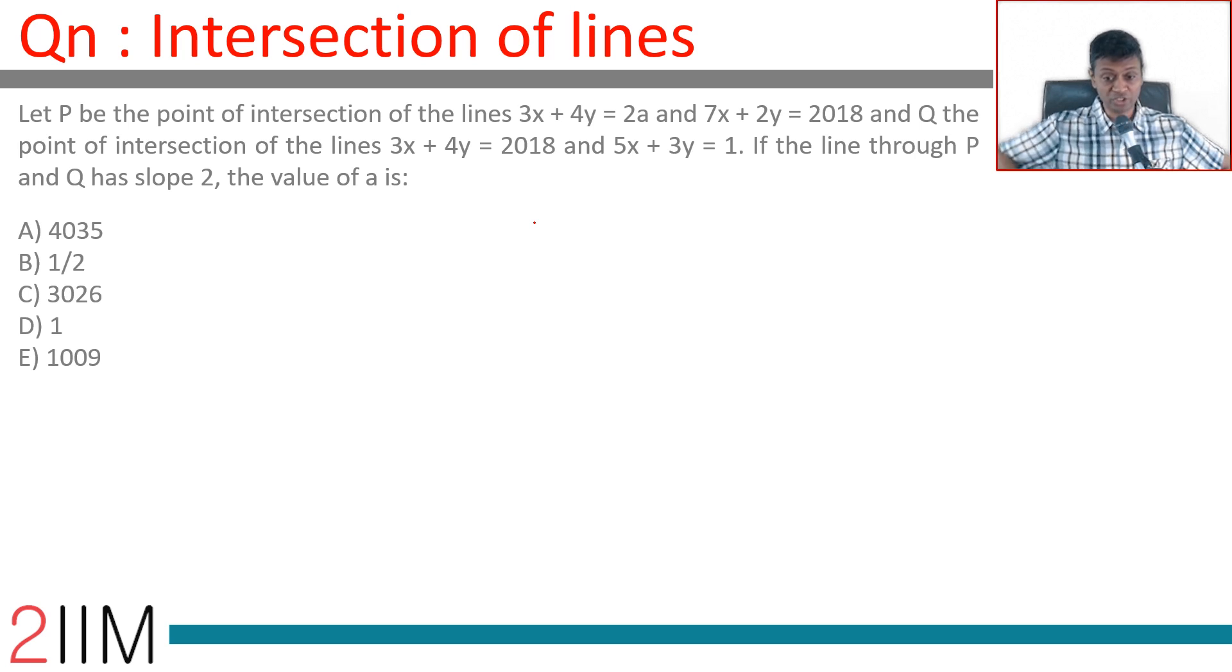Intersection of lines: let P be the point of intersection of the lines 3x + 4y = 2a and 7x + 2y = 2018, and Q be the point of intersection of the line 3x + 4y = 2018 and 5x + 3y = 1.